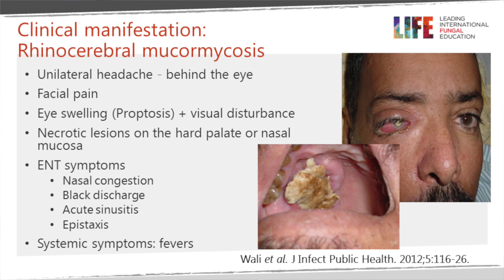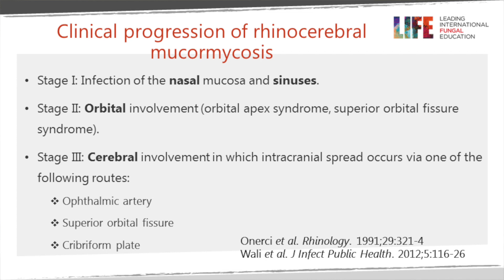In stage one, infection starts in the nasal mucosa and sinuses, then usually progresses to orbital involvement, sometimes with the orbital apex syndrome affecting the optic nerve and eye movement nerves - causing the superior orbital fissure syndrome with diplopia, inability to move the eye, and proptosis. Continuing spread causes cerebral involvement through the ophthalmic artery, superior orbital fissure, or cribriform plate, usually resulting in a frontal lobe abscess.